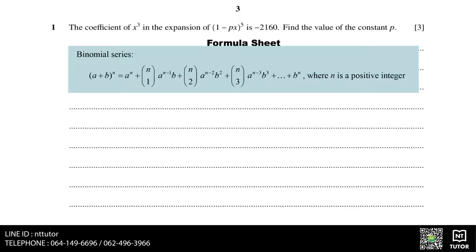We have a formula for this from the formula sheet in the binomial series, where in this case, our a equals 1, b equals minus px, and n equals 5.